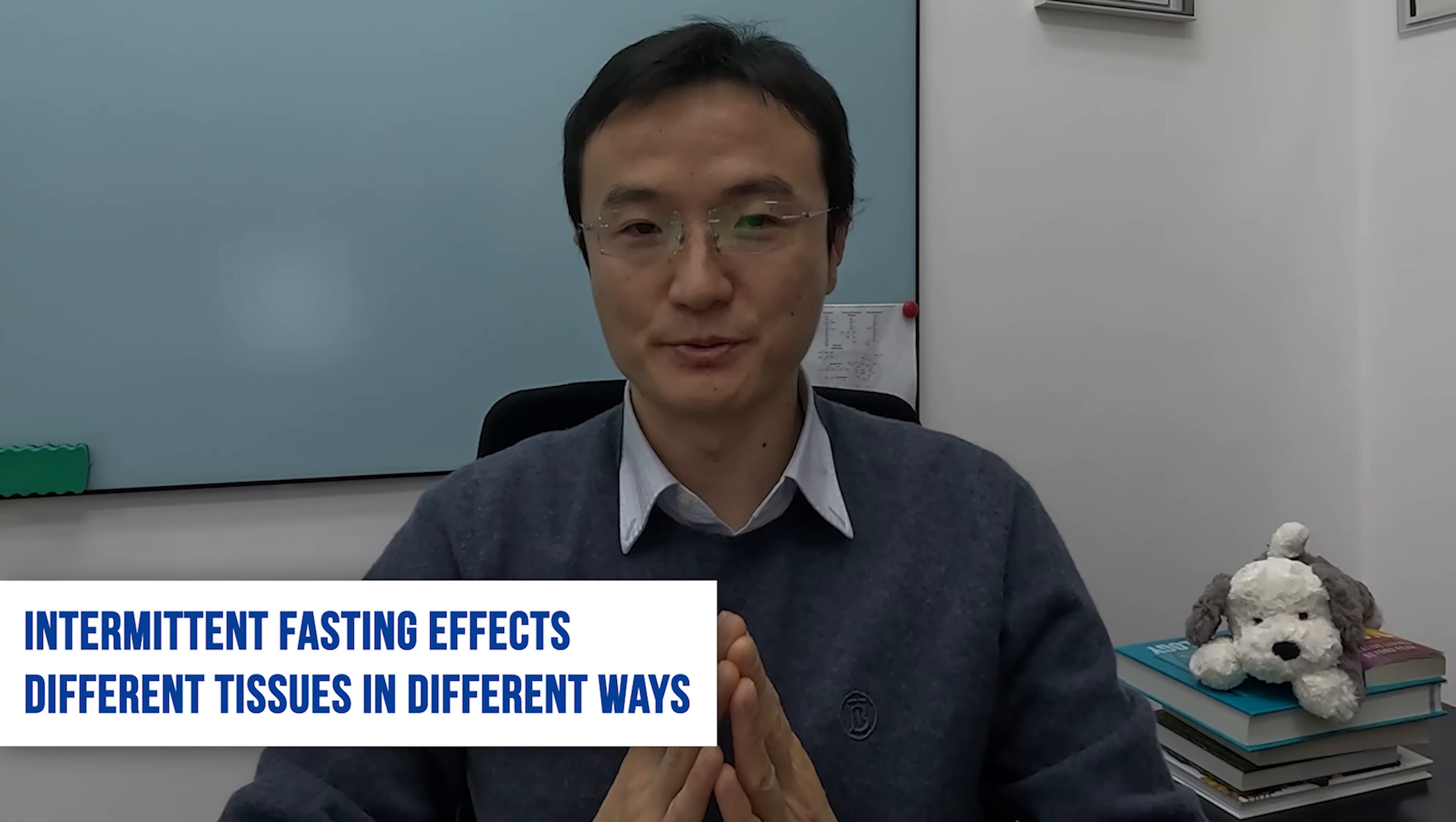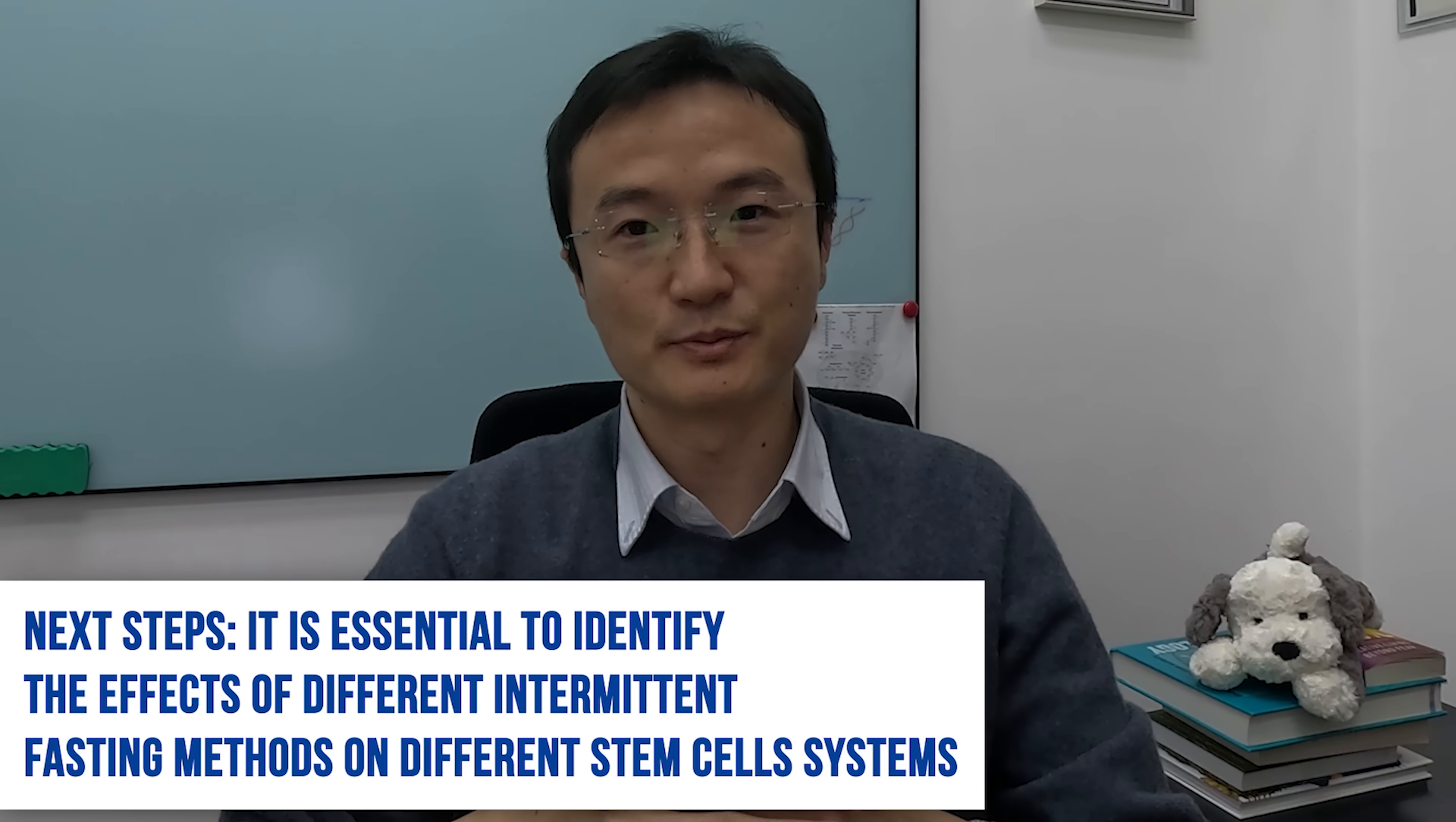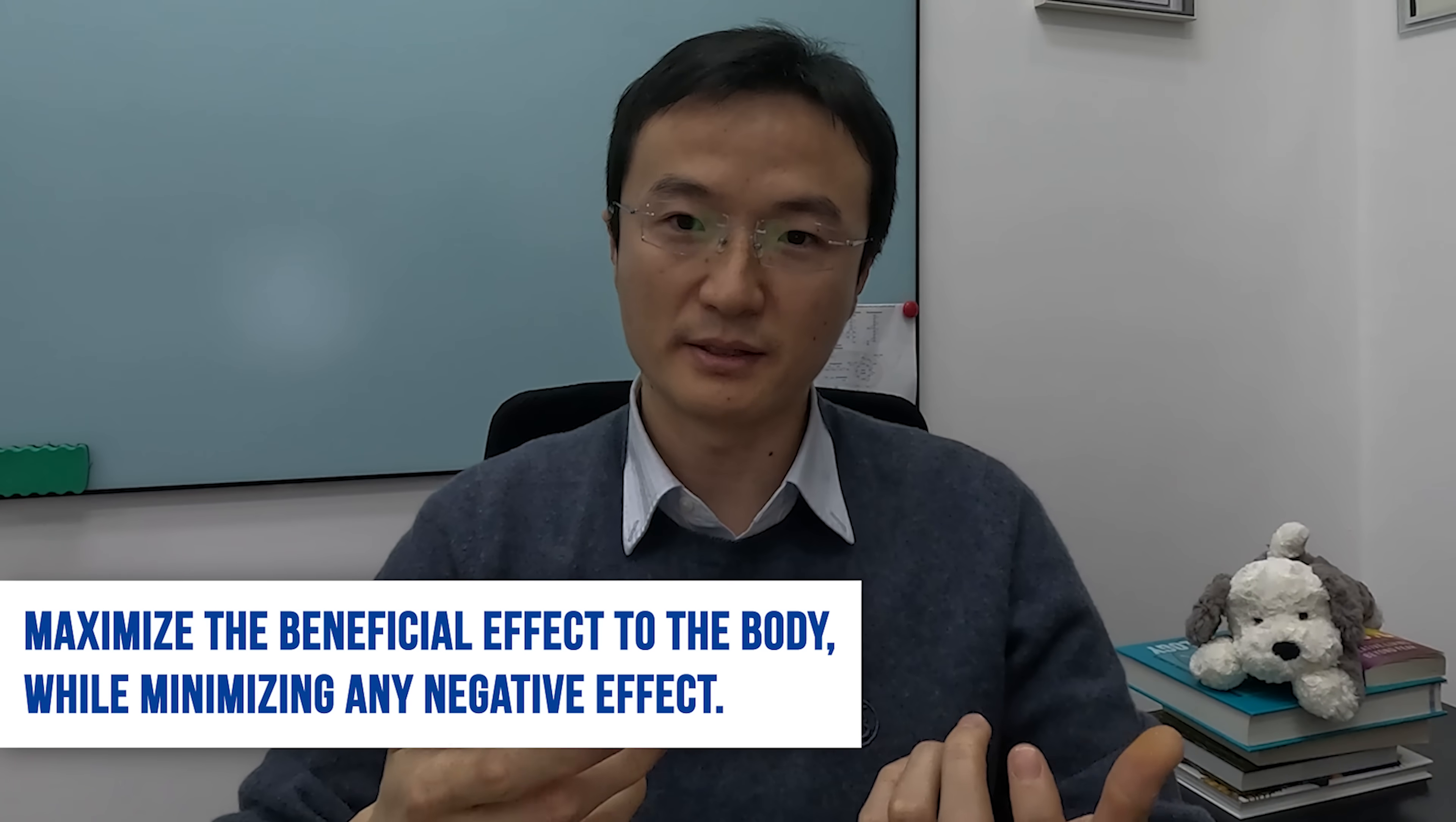All right. Thank you, Nick, for reaching out about our research. To answer your questions, intermittent fasting has been shown to have many beneficial effects on the body, but the exact impact on tissue health remains unclear. So our study suggests that intermittent fasting may affect different tissues in different ways. So this variability may be linked to the unique characteristics of stem cells and their microenvironment within different tissues. So for the next steps, I think it is essential to identify the specific effect of different intermittent fasting methods on different stem cell systems. And additionally, we need to develop strategies to optimize these methods to maximize the beneficial effect to the body while minimize an inactive effect. So although animal studies suggest that the topical application of vitamin E can mitigate the effect of fasting on hair growth and human hair follicle stem cells exhibit similar apoptosis when metabolizing fat, I think it is necessary to conduct more detailed studies in humans to evaluate the effect of vitamin E.